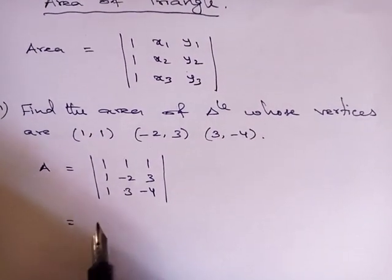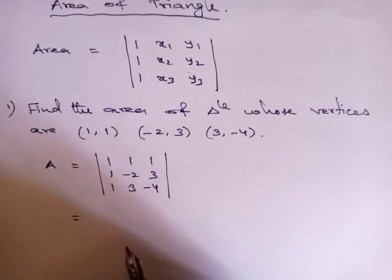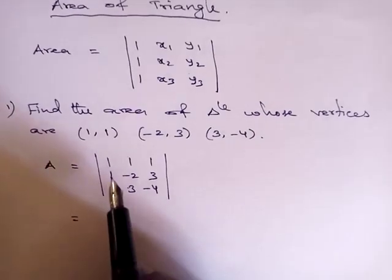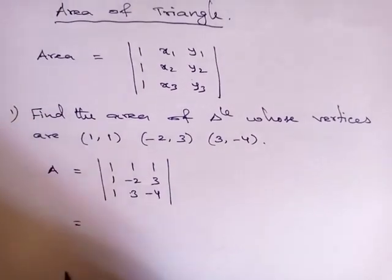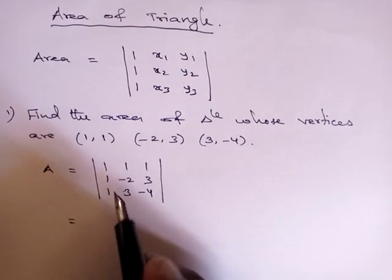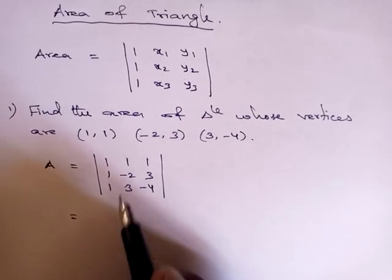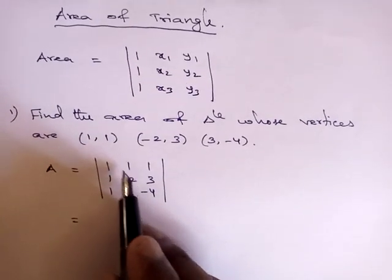Now we can find this determinant directly or we can use the property. See here, one one one, or here also one one one. We can use any row or column-wise property. Before going to find this determinant we can apply this property. First I am going to make it as zero, this one.